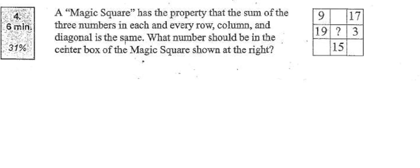We're going to look at the magic square here on the bottom of the last page. The magic square has the property that the sum of the three numbers in each and every row, column, and diagonal are the same. What number should be in the center of the magic square shown at the right?